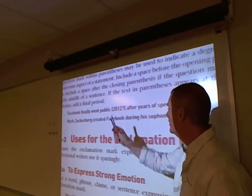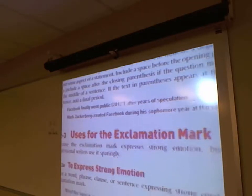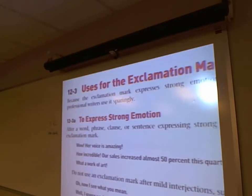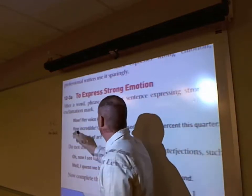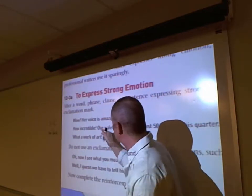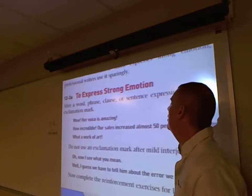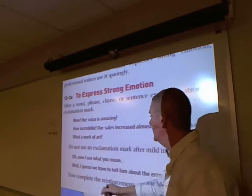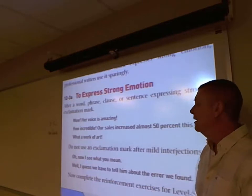Exclamation point: 'Wow, her voice is amazing!' — that's exclamatory. 'How incredible!' — exclamatory. 'A work of art!' — exclamatory. But now look at the lower-level emotional: 'Oh, now I see what you mean.' Since it's not so exclamatory, use a comma to offset it. Also with the word 'well' — 'Well, I guess we have to tell them about the error we found.' It's not quite as emotional, so 'well' is offset with a comma as well.